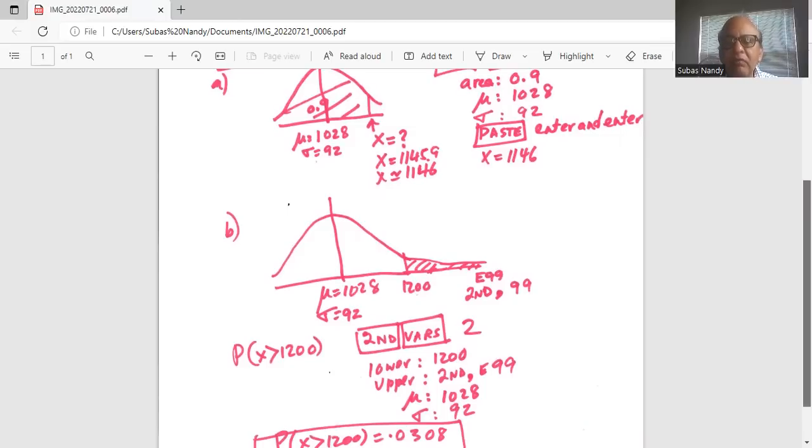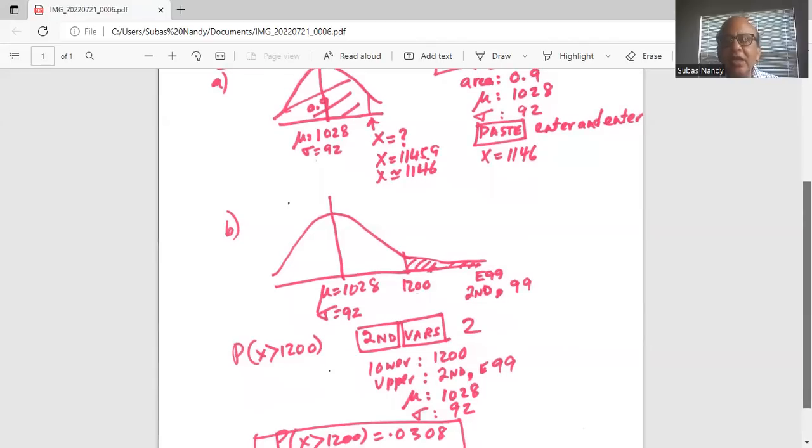That means one followed by 99 zeros. How will I get the E? I will press the second button, then the comma button, which is on top of button 7. So, second comma, which will give me the small capital E, then I will type in 99 to indicate the right boundary, which is a very large number, one followed by 99 zeros.